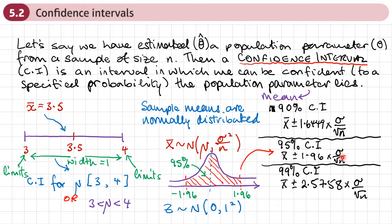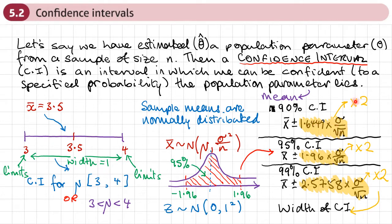That gives us z-values of 1.96 and minus 1.96. Undoing the standardization, if I take my sample mean and add or subtract 1.96 times sigma over root n, that gives me the upper and lower limits for a 95 percent confidence interval. Similarly, for a 90 percent confidence interval the z-values are 1.6449 and minus 1.6449, and for a 99 percent confidence interval the value is 2.5758. You can get these values from the percentage points table or your calculator. If you multiply the highlighted terms by 2, that gives the width of a confidence interval.